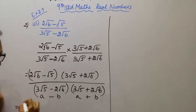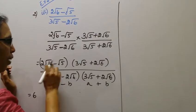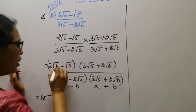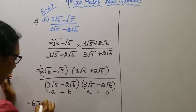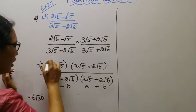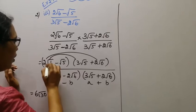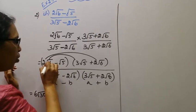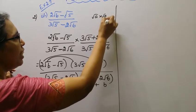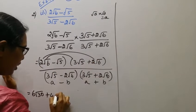Now expanding the numerator: multiply each term separately. 2 times 3 is 6. Root 6 into root 5 is root 30. Then 2 root 6 into 2 root 6: root 6 into root 6 equals 6, so that gives 4 times 6 equals 24. For the root 5 terms: root 5 into root 5 equals 5. Root a into root a equals a — same roots multiply to give the number. Root 6 into root 6 gives 6.